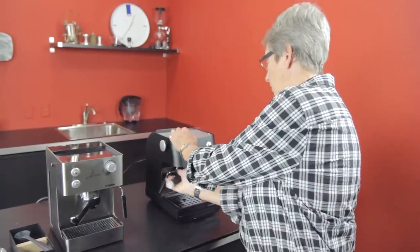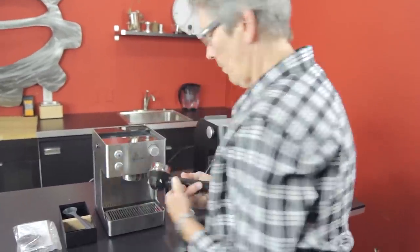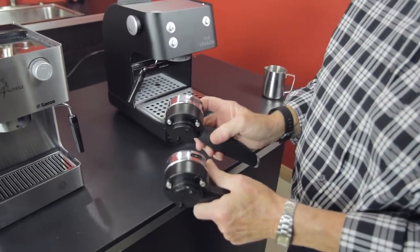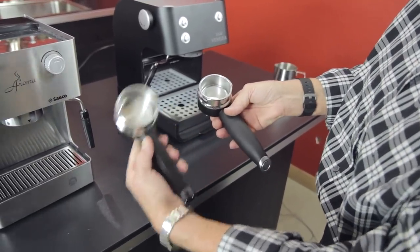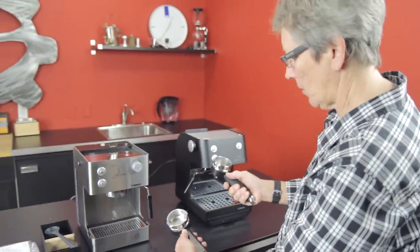Both machines have a pressurized portafilter system. They're both chrome-plated brass. They both have the pressurized system on the inside. The handle is a little bit different. Hard plastic and more of a rubberized grip on this one here.